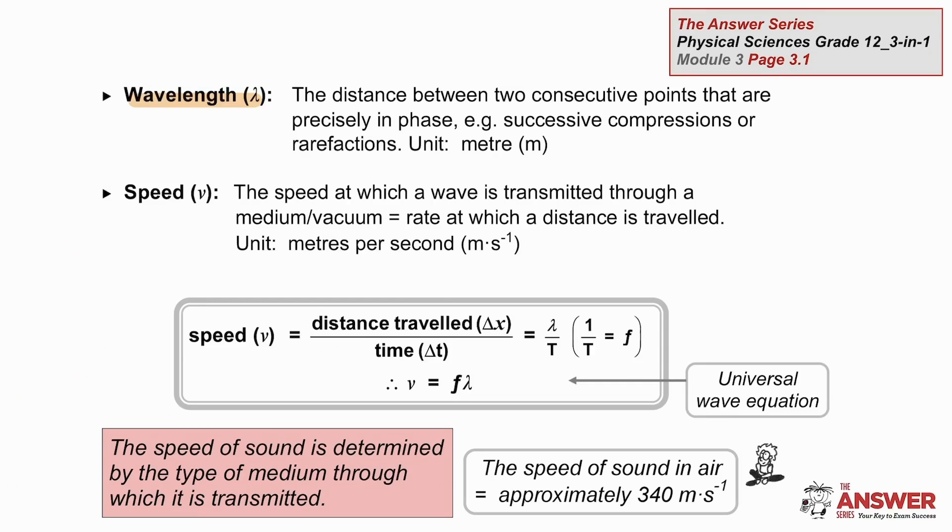Wavelength is defined as the distance between two consecutive points in phase. In sound, one wavelength will be from the center of a compression to the center of the next compression.